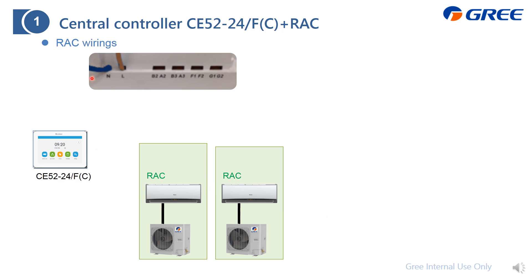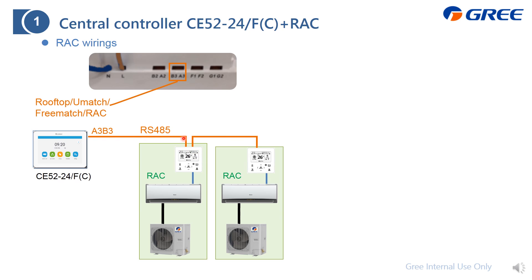Here is the wiring interface of the CE52. This LN is the power supply for the CE52. For the residential air conditioner, to control it we just need an adapter, which is the wire controller. The output is already RS485 with Modbus protocol, so we can combine them together and connect to this central controller.